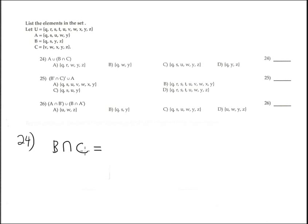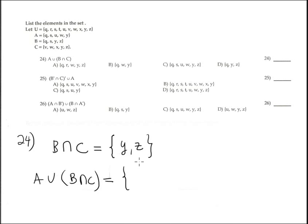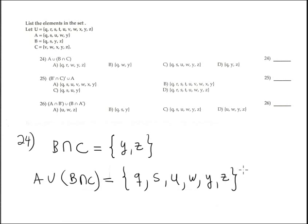First, compute the intersection between B and C. The intersection between B and C is the common elements — the common elements between B and C are Y and C. Now, union A with the result: the union between A and the intersection of B and C gives us Q, S, U, W, Y — since Y is a repetition, write it only once — and Z. This corresponds with the option containing Q, S, U, W, Y, and C.